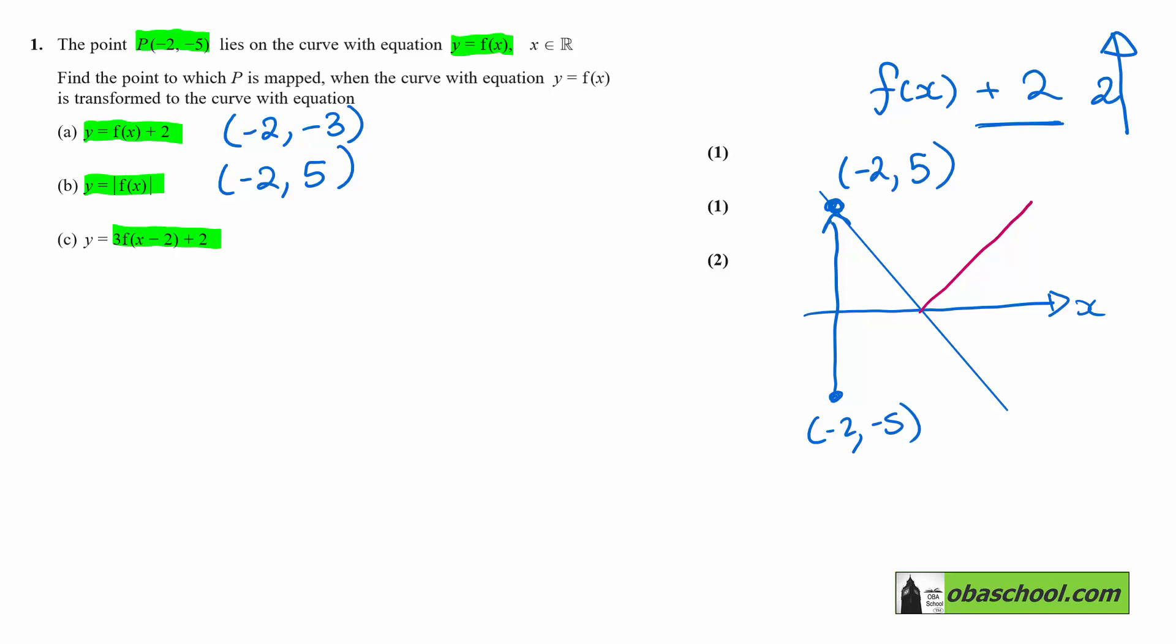The first thing that we need to do here is deal with the x - 2 inside. So f(x - 2), this time the 2 is inside, that is a horizontal translation. And with x - 2, it is 2 units to the right. So the x-coordinate will increase by 2. That will make it 0.